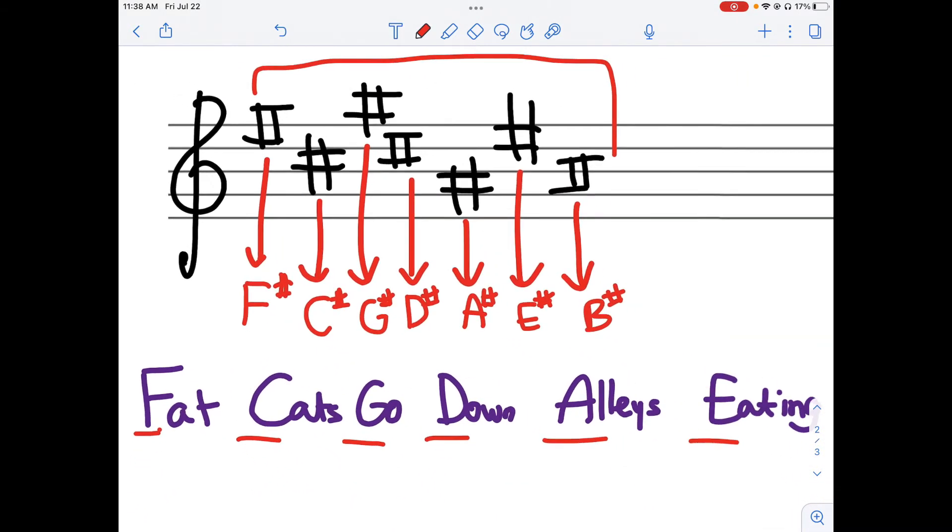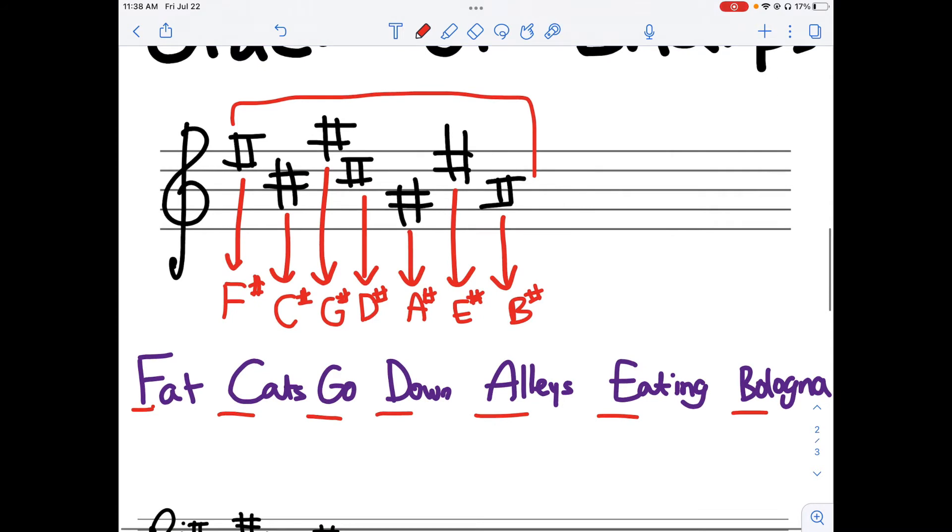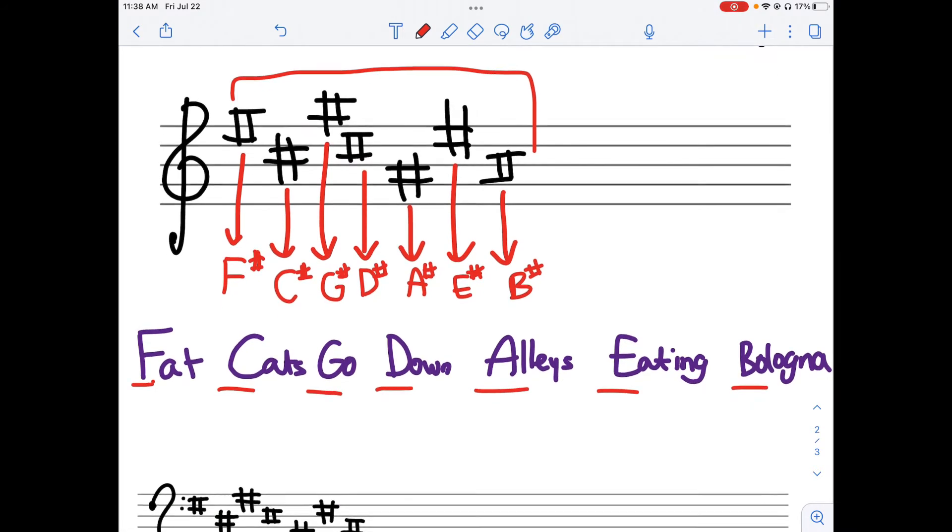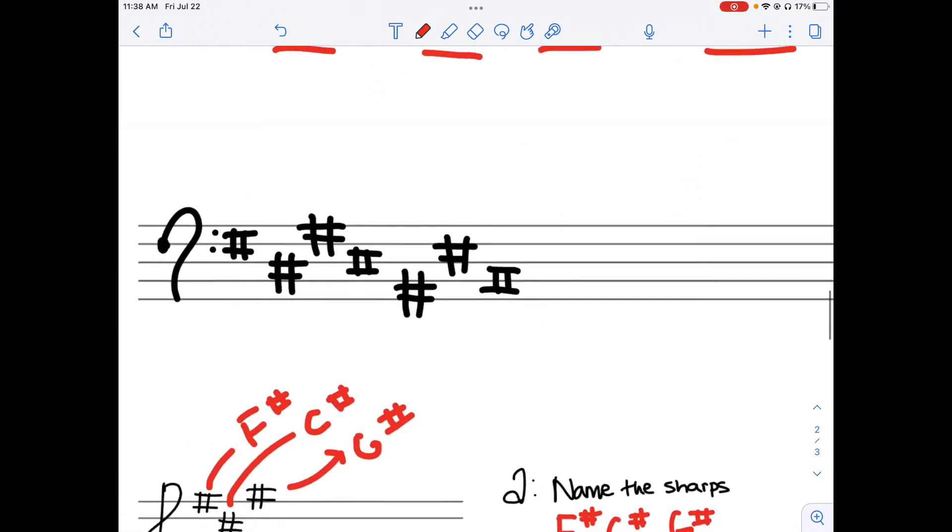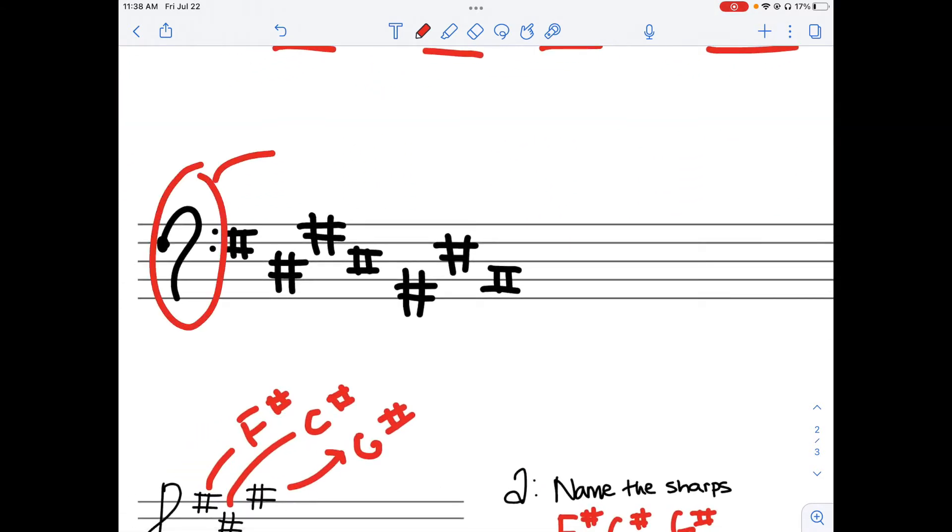And an acronym that helps us remember this is 'Fat Cats Go Down Alleys Eating Baloney.' It's just to help you remember the order. And similarly, we can write it in the bass clef as well, as you remember from our previous videos.